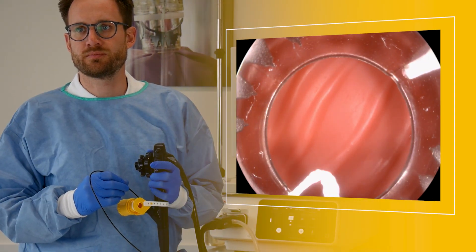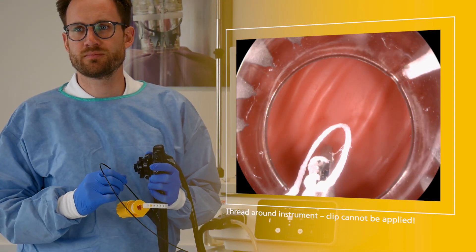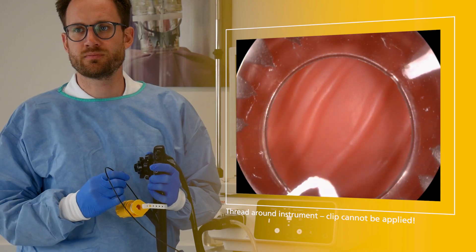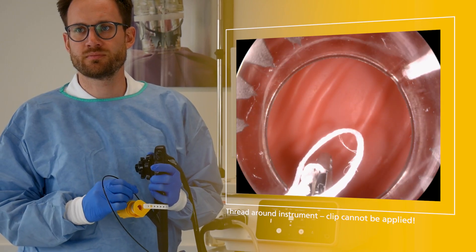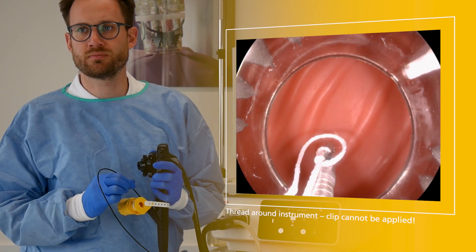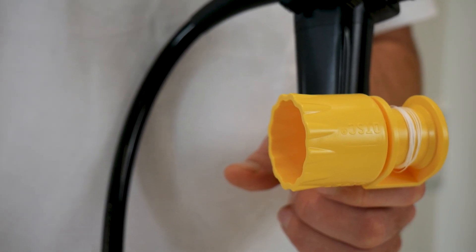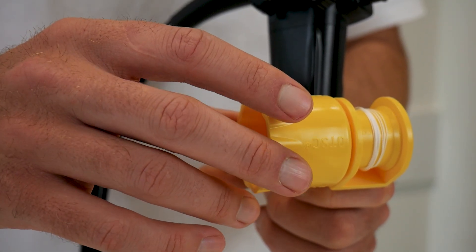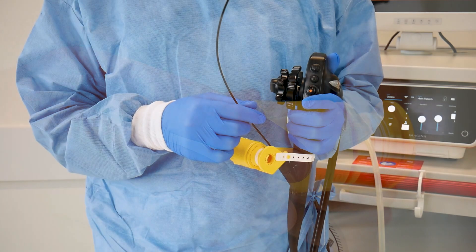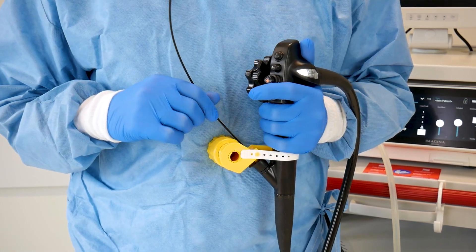When introducing an instrument, the release thread should remain slightly tensioned to prevent it from wrapping around the instrument and hindering or impeding clip application. Therefore, before introducing the instrument, turn the hand wheel clockwise until slight tension is felt and press it against your body to prevent the thread from unwinding.